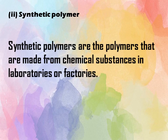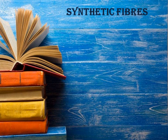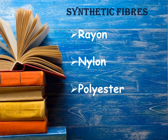Synthetic polymers are the polymers that are made from chemical substances in laboratories or factories. Examples of synthetic polymers include plastics, Teflon, and polystyrene. Now we will study some synthetic fibers in detail: rayon, nylon, polyester, and acrylic.